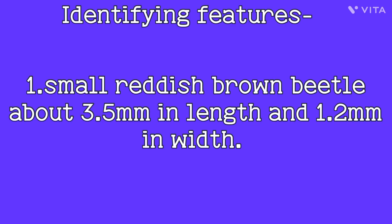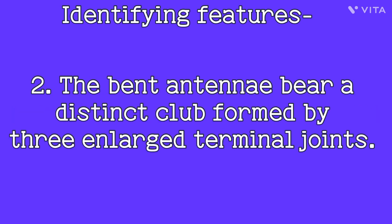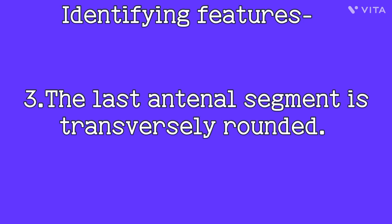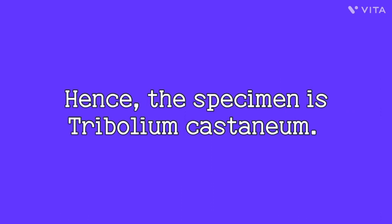Small reddish-brown beetle, about 3.5 mm in length and 1.2 mm in width. The bent antennae bear a distinct club formed by 3 enlarged terminal joints. The last antennal segment is transversely rounded.